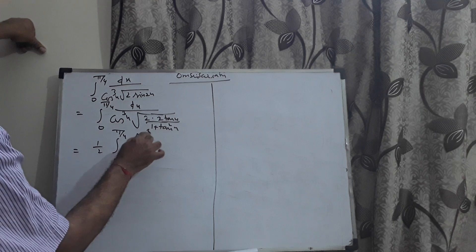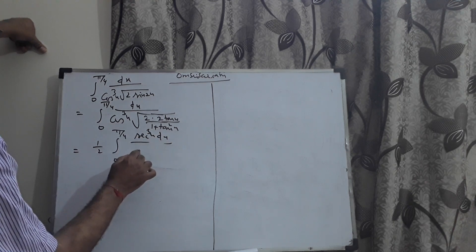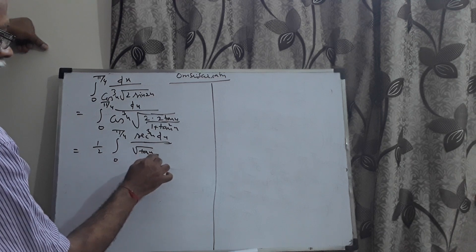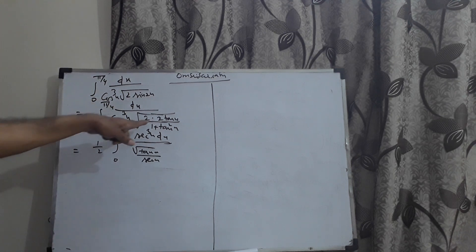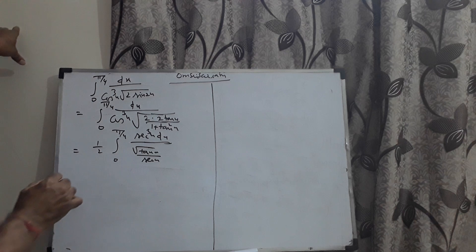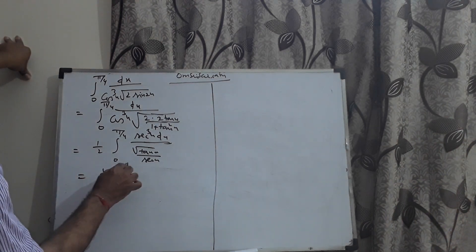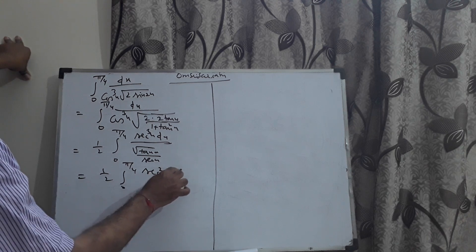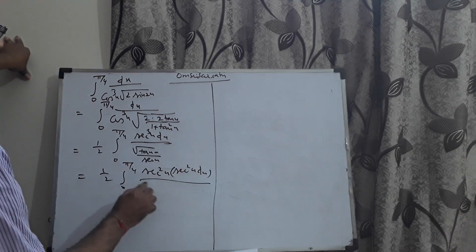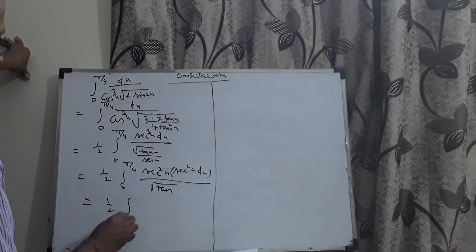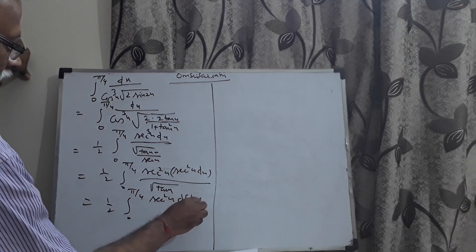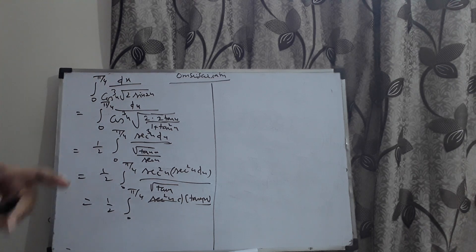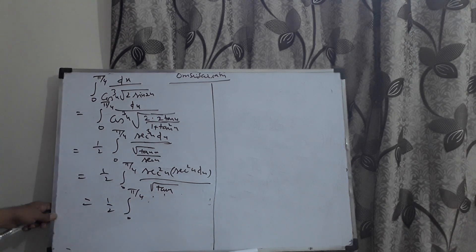This becomes (1/2)∫₀^(π/4) sec³x dx / √(tanx/(1+tan²x)). Here 1 + tan²x = sec²x, and √(sec²x) = secx, which is taken to the numerator. So we get (1/2)∫₀^(π/4) sec²x · sec²x dx / √(tanx), which can be written as (1/2)∫₀^(π/4) sec²x · d(tanx) / √(tanx).